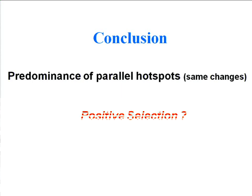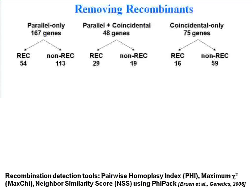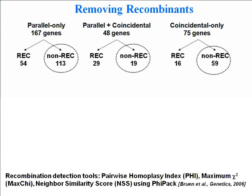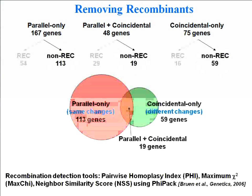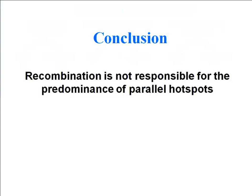Regarding positive selection: it's too early to say, because these parallel hotspot changes, though appearing as hotspot mutations, could also be a result of recombination. So we had to remove recombinants. We used three statistics — phi, max, and neighbor similarity scores — to remove recombinants. We found about 75% of genes with hotspot mutations to be non-recombinant. We then recalculated the frequency of different types of hotspot mutations in the non-recombinant dataset and found the same trend: predominance of parallel hotspot mutations. So recombination is not responsible for the predominance of parallel hotspot mutations.